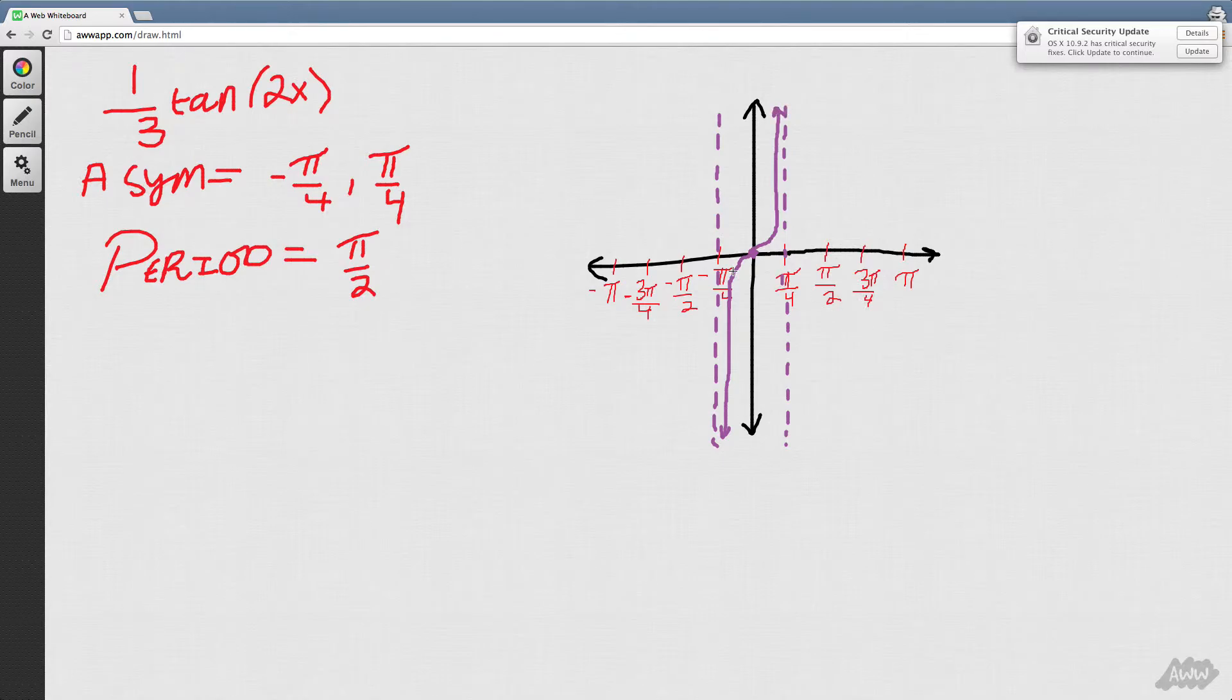And in order to find the period through a graph, you just look at the distance between the two asymptotes. So we see that, let's find the distance between the two asymptotes. In order to do that, you just do pi over 4 plus pi over 4, combine, and it's 2 pi over 4. Finally, break this down, and then you finally get pi over 2.